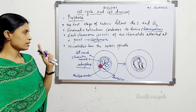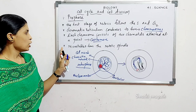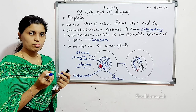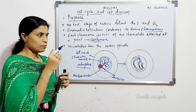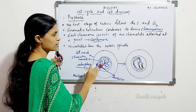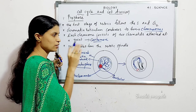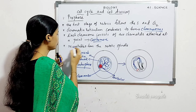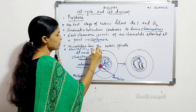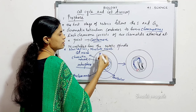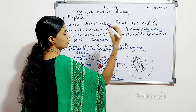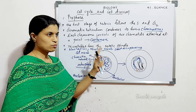The next event in prophase: microtubules form the mitotic spindle fibers. In animal cells, centrioles split and move to opposite poles, initiating the formation of spindle fibers. At the same time, the nucleolus and nuclear membrane start disappearing.